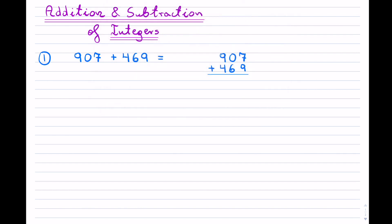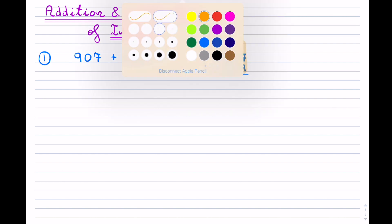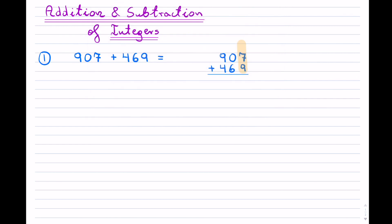So when you are doing this, your place value of ones — you add those up together, and you'll have 7 plus 9, which gives you 16. I can only place one digit underneath, so I'll put the 6, and because the answer was 16 I will carry the 1 to the tens column.